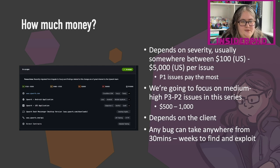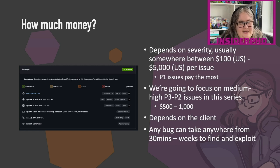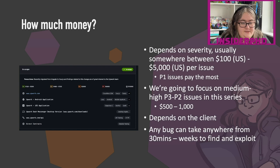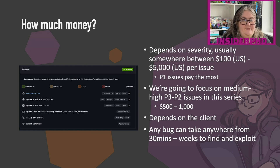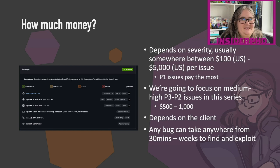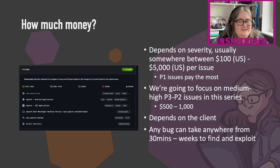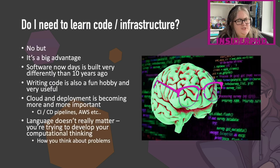I don't really bother reporting low severity issues because I don't really enjoy finding them. And P1s can be quite rare to find. Fundamentally the payouts depend on the client — some have more budget than others. Any bug can take anywhere from 30 minutes to weeks to find and exploit. The shortest time I've ever found a vulnerability was five minutes, but I only got paid $50 for it. Just because you put in tons of time doesn't mean you get a big bounty, and just because you put in a little time doesn't mean you get a small one. It depends on the severity.